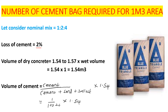The volume of dry concrete is 1.5 to 1.7 times the wet volume. In this case we use 1.5, so for one cubic meter wet concrete, that gives us 1.5 cubic meters of dry concrete. From this 1.5 cubic meters, we need to find the volume of cement within it.